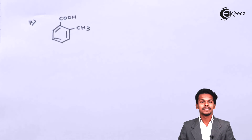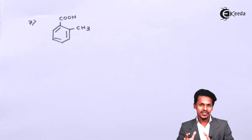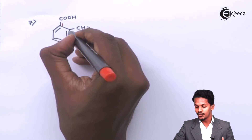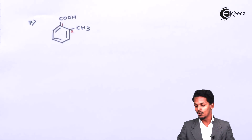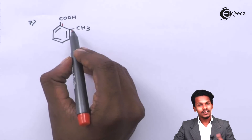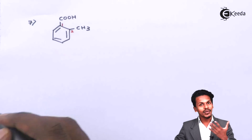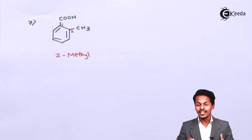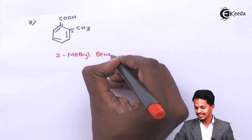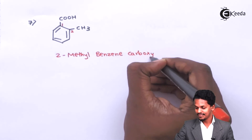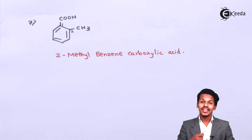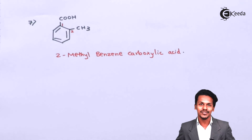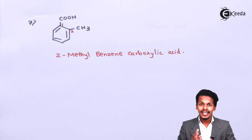For the last example, the carboxyl group is at carbon 1 of the benzene ring, and the carbons are numbered 2, 3, 4, 5, and 6 onward. A methyl group is attached at carbon 2. Therefore the compound can be named either 2-methylbenzoic acid or 2-methylbenzene carboxylic acid. Since it is an aromatic carboxylic acid, the IUPAC name ends with the suffix 'carboxylic acid.'